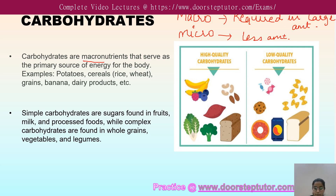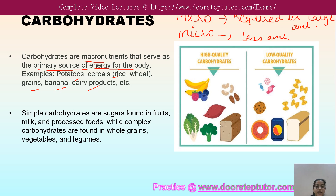Carbohydrate is a macronutrient required in large amounts in our body, and it is also the primary source of energy for our body. For example, you eat a lot of carbohydrates in day-to-day life — like potatoes, cereals, grains, bananas, and dairy products. A major portion of our daily food contains carbohydrates.